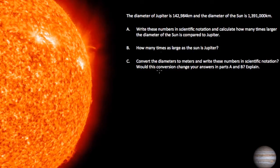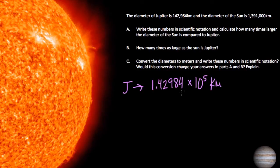So what do we have so far? We have Jupiter's diameter and we have the Sun's diameter in kilometers. So I'll write J for Jupiter. That was just 1.42984 times 10 to the 5th in kilometers. And we also have the Sun's diameter, and that was 1.391 times 10 to the 6th kilometers.